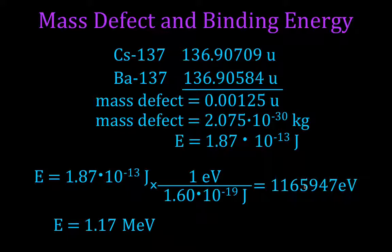Okay? And that's it. That's the mass defect and the binding energy for the beta decay of cesium-137. That's the energy released.